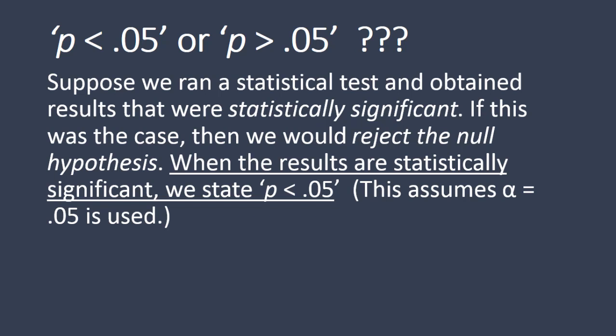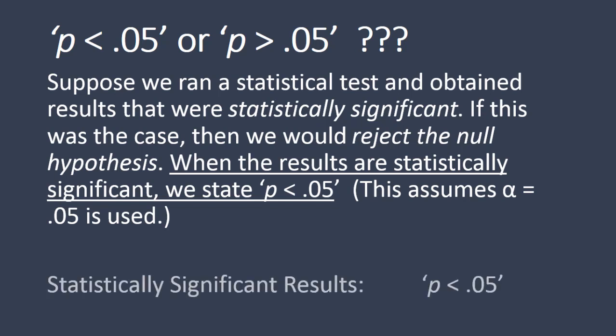When we use an alpha of 0.05, that's why we state P is less than 0.05. If we used an alpha of 0.01 and the test was statistically significant, then we would state P is less than 0.01. We'll get into the technical details about why we state P is less than 0.05 in just a few moments. So in summary, for statistically significant results, we want to state P is less than 0.05.